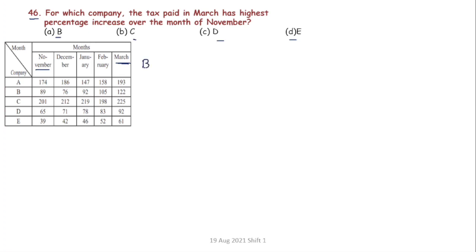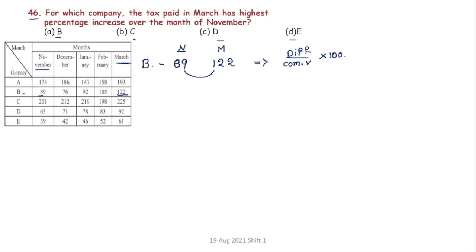First, Company B. Company B: November is 89,000 and March is 122. So the difference is 33. Using the percentage increase formula — difference divided by the comparing value into 100 — that is 33 divided by 89 into 100, which gives approximately 36 percentage.